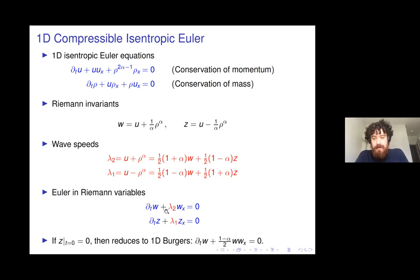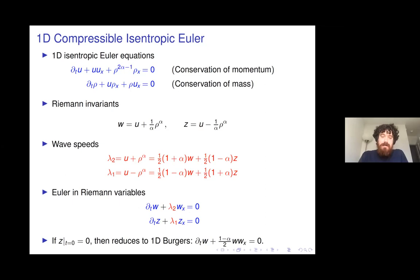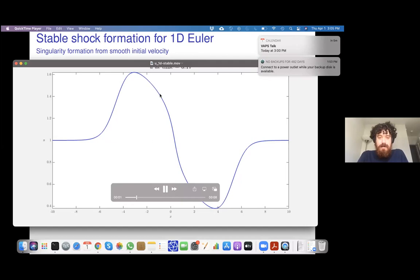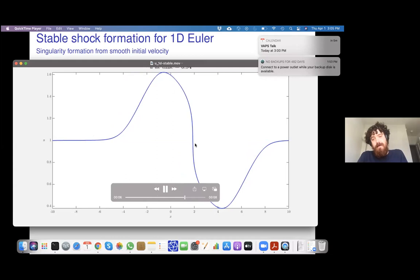If you take Z equal to zero, then the first equation after rescaling is just Burgers' equation. The 1D isentropic case is particularly simple: you can study it in these two Riemann invariant variables and use the method of characteristics to study different properties of the solutions. Here's an example of a shock forming for 1D Euler — the velocity gradient goes to infinity, and then a shock forms.